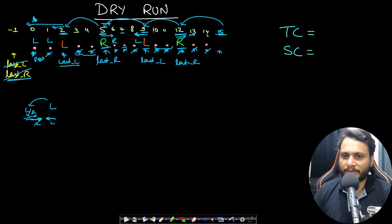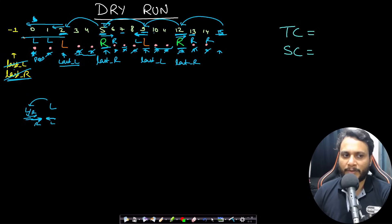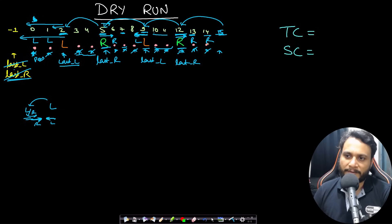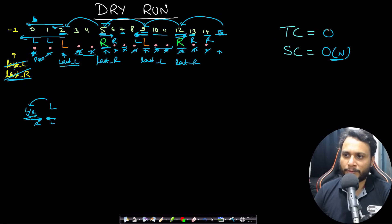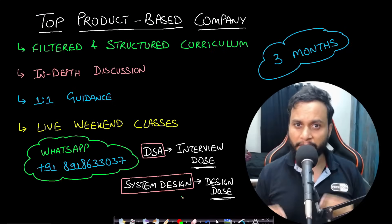The position pointer skips 13 and 14 and reaches index 15, which is N — out of bounds. Since last_R (12) is greater than last_L, we call right_domino_push from index 13 to N-1, making those R. The final string reflects: indices 0-2 pushed left, index 5 pushed right, index 7 unaffected, indices 10-11 unaffected, indices 13-14 become R. Space complexity is O(N) for the new string; time complexity is O(N) since we look at all characters at most twice.